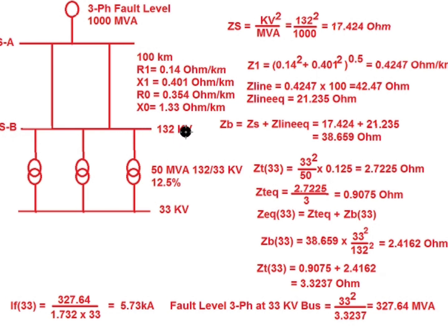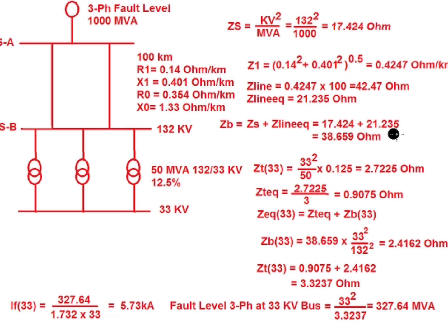At substation B, the total impedance combining the source impedance and equivalent line impedance is: ZB = Zs + Zline_equivalent = 17.424 + 21.235 = 38.659 ohm.